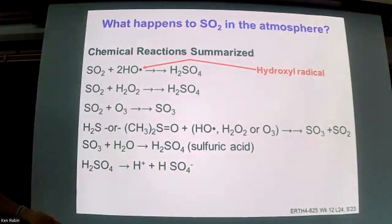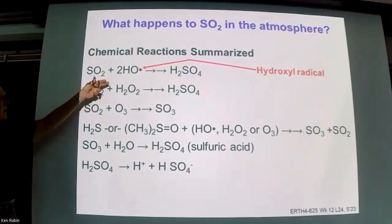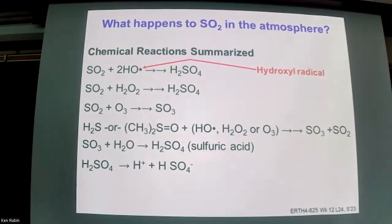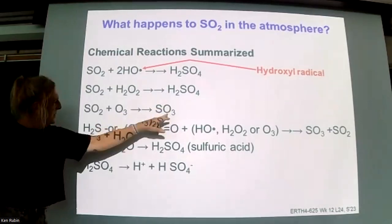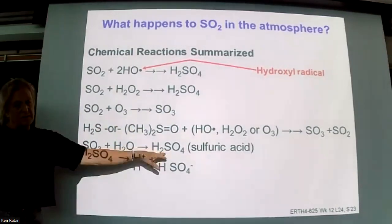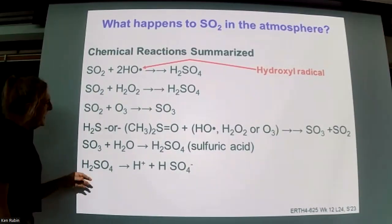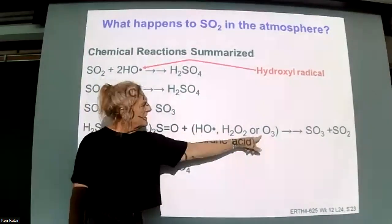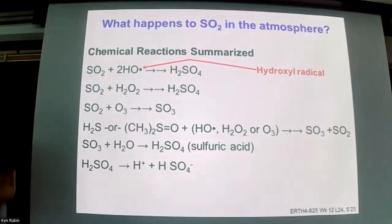Here's a summary of the chemical reactions. The first three show SO2 reacting with hydroxyl radicals, hydrogen peroxide, and ozone to make SO3. The difference is that with hydrogen peroxide and ozone we go directly to sulfuric acid, whereas with hydroxyl radicals we go to SO3 which then dissolves in water. The various reduced forms — hydrogen sulfide, DMS, methyl sulfone — react with those same three oxidants, ultimately making SO3.